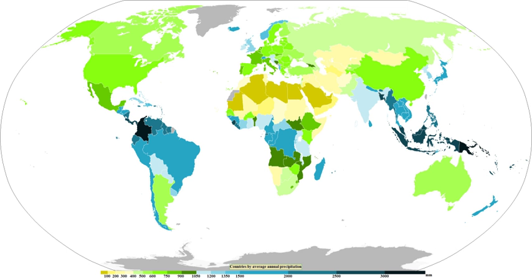Precipitation is a major component of the water cycle, and is responsible for depositing fresh water on the planet. Approximately 505,000 km³ of water falls as precipitation each year — 398,000 km³ over the oceans and 107,000 km³ over land. The globally averaged annual precipitation is 990 mm, but over land it is only 715 mm. Climate classification systems such as the Köppen climate classification use average annual rainfall to differentiate climate regimes. Precipitation may also occur on other celestial bodies; Mars has precipitation which most likely takes the form of frost, rather than rain or snow.